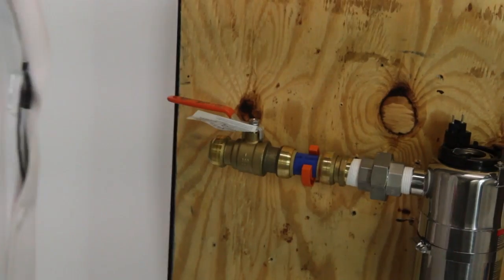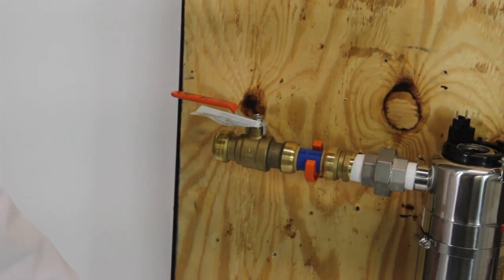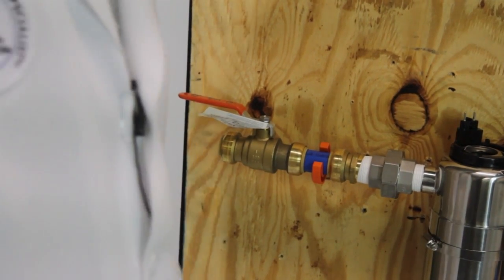We're going to do the same thing at the bottom. We're going to cut a nipple and an elbow and bring it over so we can line up our fittings as well.